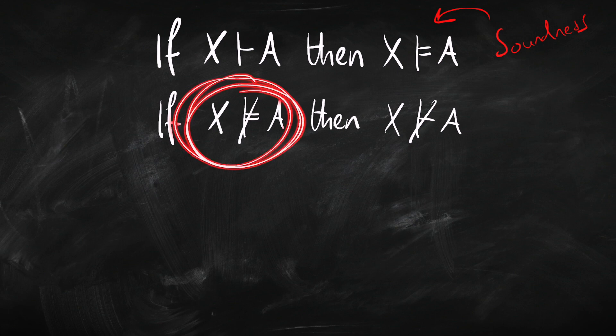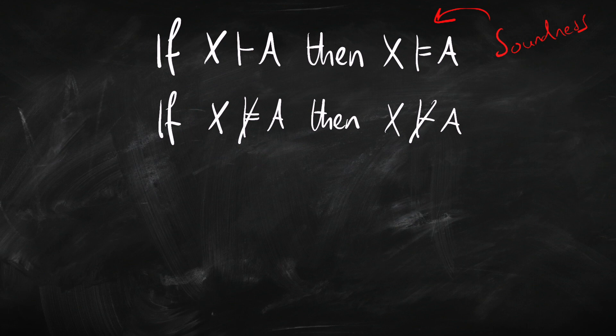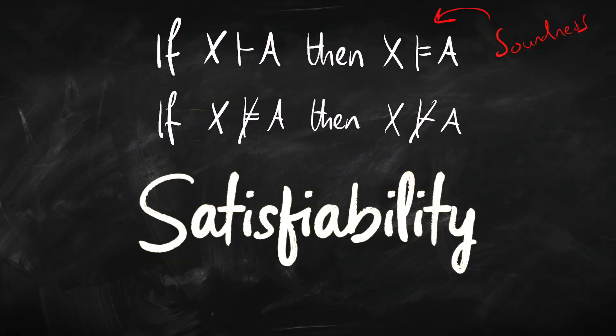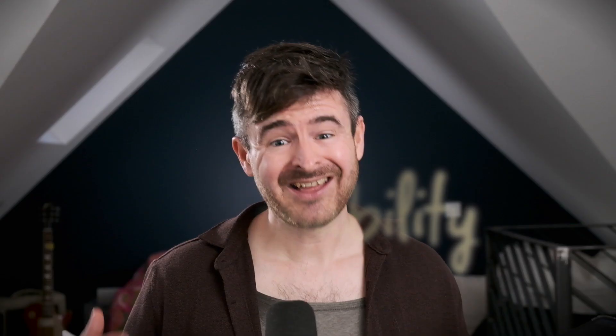The next step in manipulating these conditionals is thinking about what a non-entailment means. A helpful way to express this is in terms of satisfiability. To say something is satisfiable means it can be true. A sentence is satisfiable if, from the point of view of our logic, it can be true. In propositional logic, that means some valuation assigns true to it. In first-order logic, that means the sentence is true in some model.